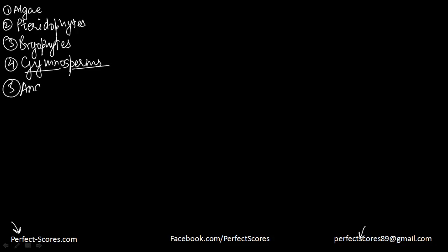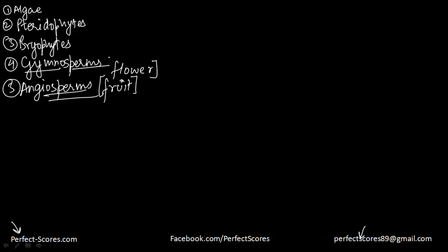The next topic is angiosperms. Unlike gymnosperms, in angiosperms there is a specialized organ that helps to cover the seed while it is developing, and that organ is a flower. After fertilization, that flower develops into the fruit. So that is basically the difference between angiosperms and gymnosperms — angiosperms have flowers which are then converted into fruits, and the seeds are enclosed. It's an exceptionally large group of plants that occur in many different kinds of habitats.